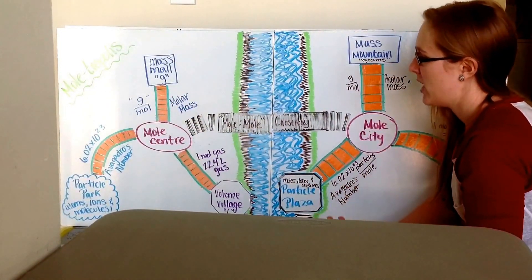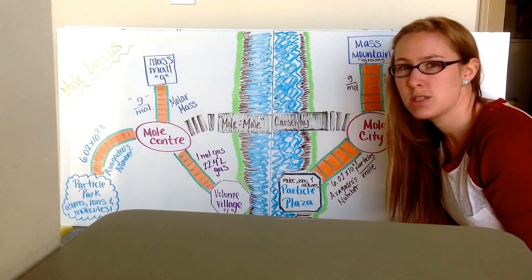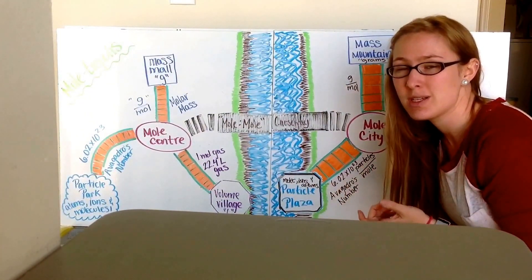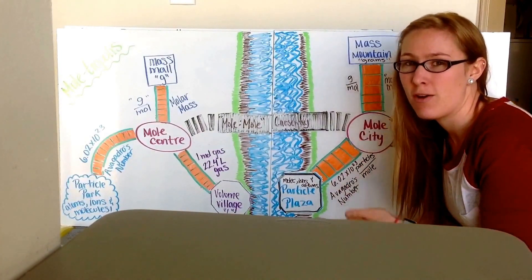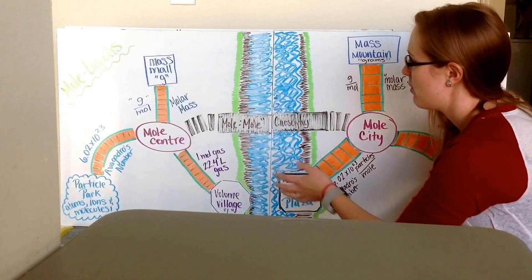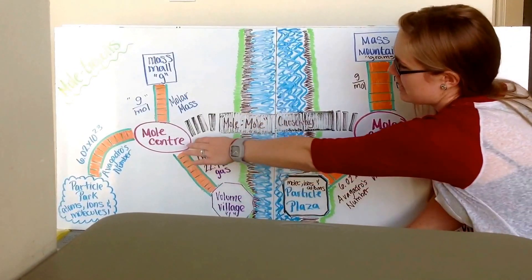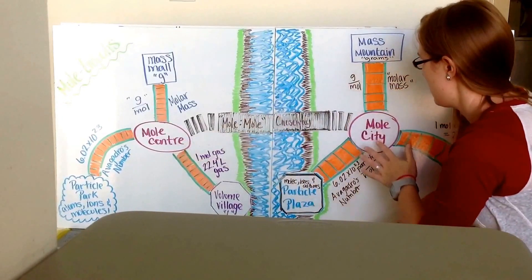And to do this, we have to use something called the mole-to-mole ratio. So in those balanced chemical equations, you have those coefficients out front. Those tell us the ratio of moles of one substance to moles of another substance. And when we pull out just those numbers, we can make a ratio of one to the other, and we can use that to convert between moles of one to moles of another.